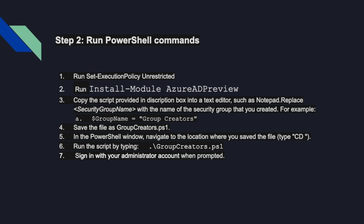In the second part, you need to run a few commands in PowerShell. First, run 'Set-ExecutionPolicy Unrestricted', then run 'Install-Module AzureAD Preview'. Next, copy the script provided in the description box into a text editor such as Notepad, replace the security group name with the name of the group you created — for example, 'GroupCreators'. Save the file as 'GroupCreators.ps1'. In the PowerShell window, navigate to the location where you saved the file using the CD command, run the script by typing the group name, and sign in with your administrator account when prompted.